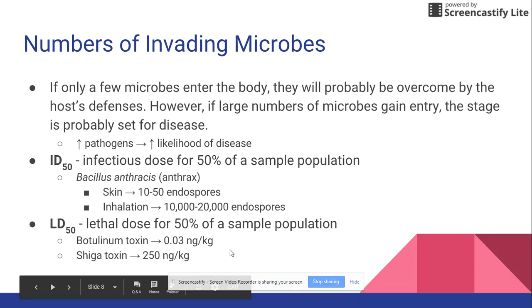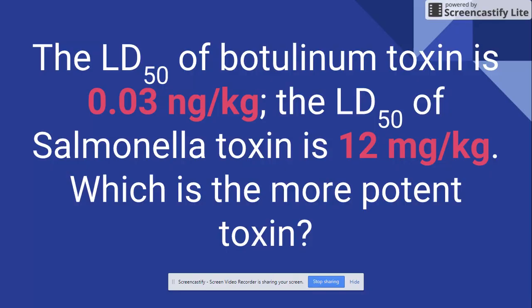Think about it like drinking a poison — would you just have to take a sip, or would you have to drink a whole gallon before it killed you? Looking at this question, the lethal dose for botulism is 0.03 nanograms per kilogram, and the lethal dose for salmonella is 12 milligrams per kilogram. So which is more potent?